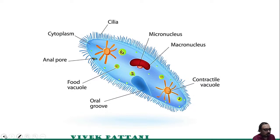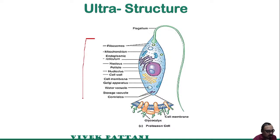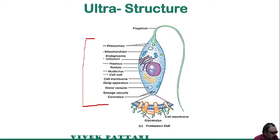Now moving towards the ultrastructure. This is a diagram of a protozoan cell, which is similar to that of a eukaryotic cell. This cell possesses most of the organelles of the eukaryotic system, but protozoan cells differ from plant cells.